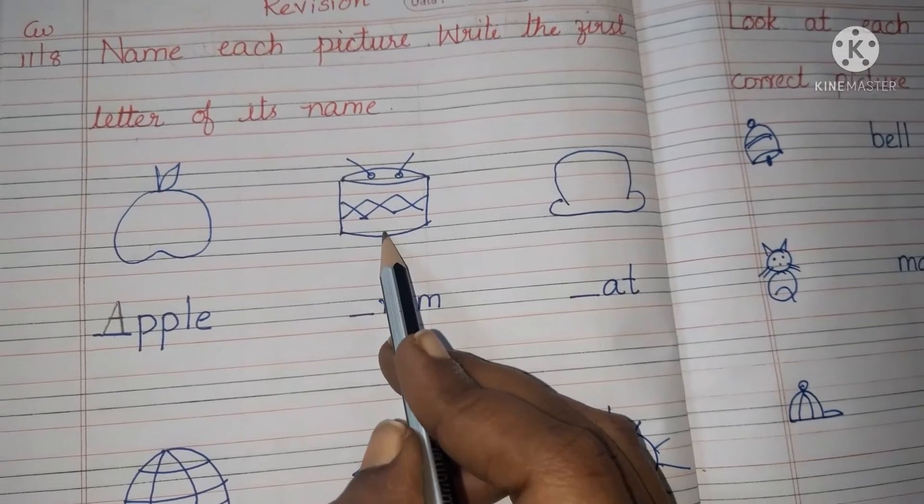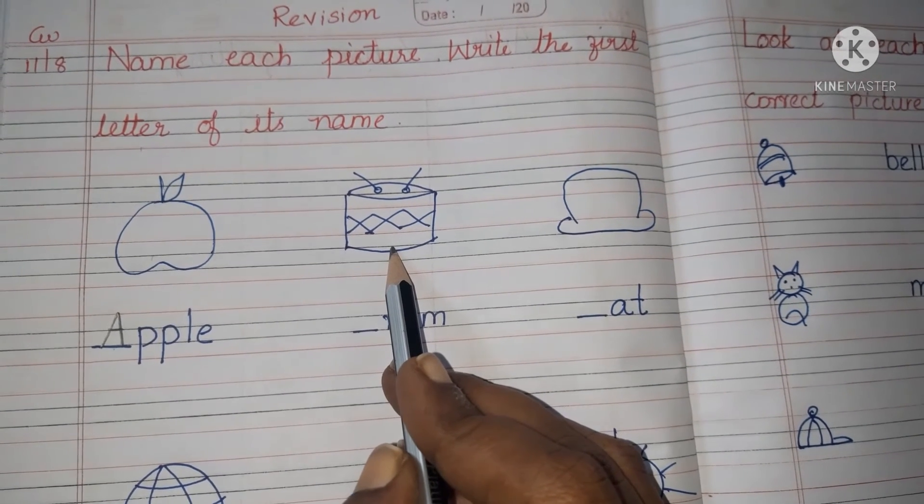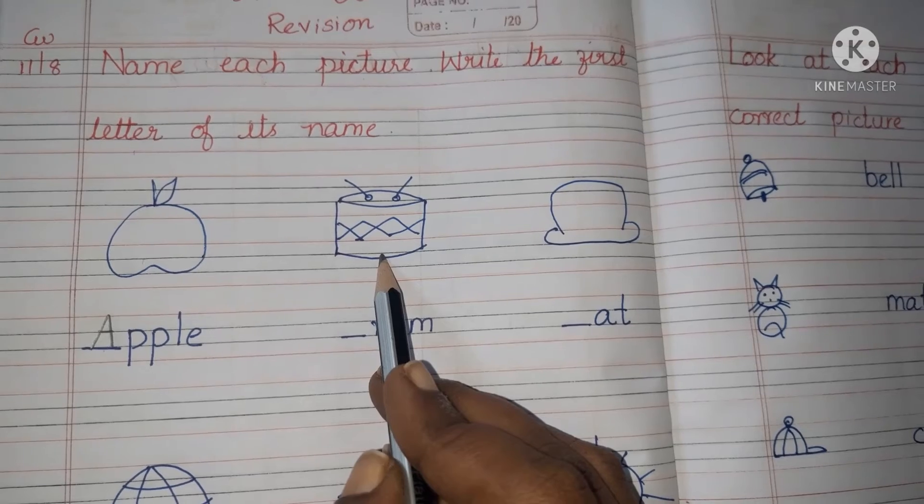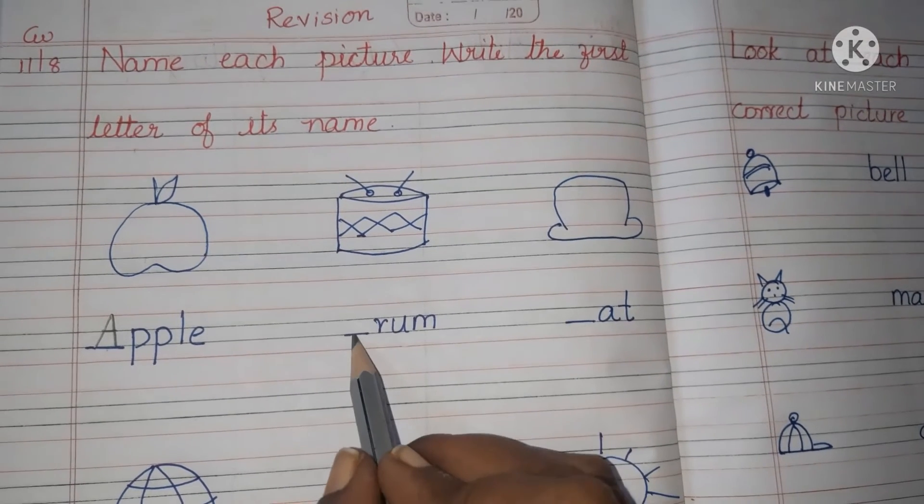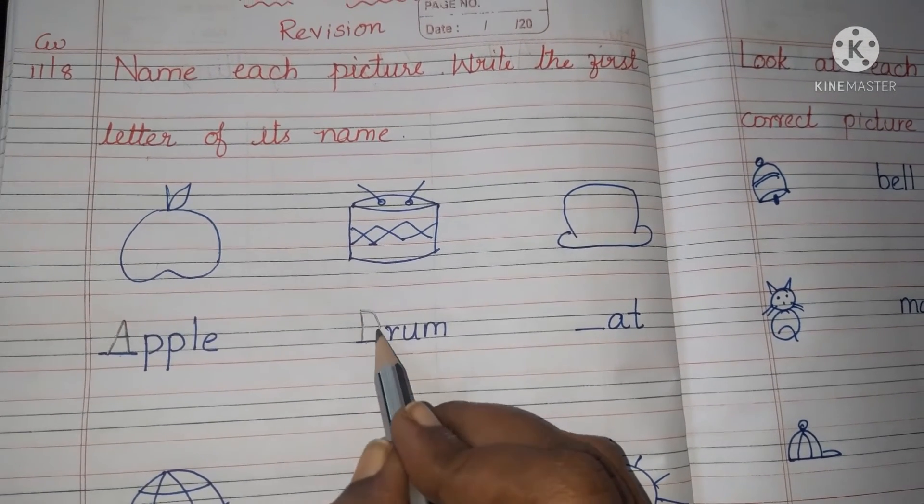Next step. See, what is this picture? Drum. So do you know the spelling of drum? Yes, D-R-U-M, drum. So what is the missing letter here? D. Write D.